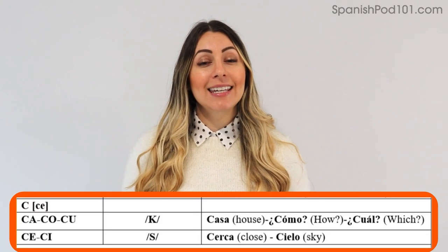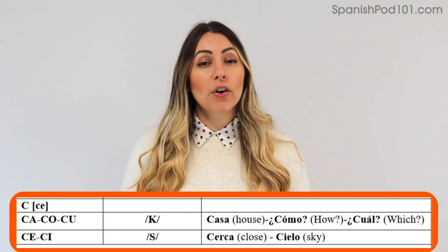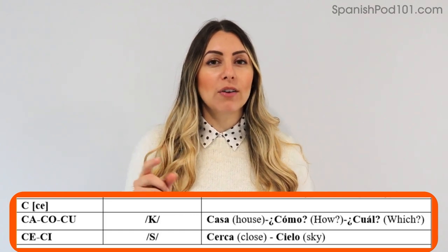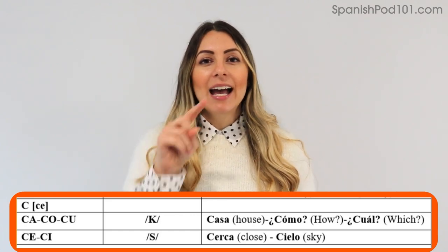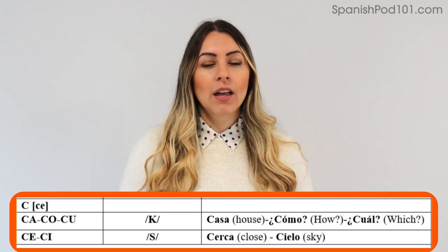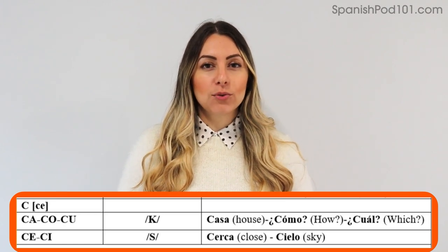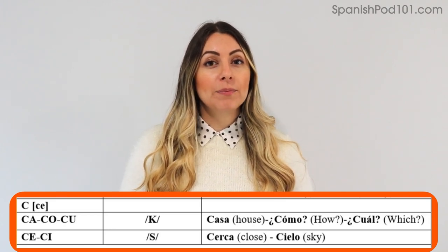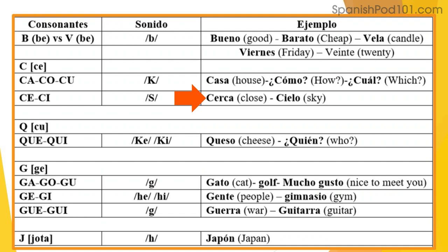If we have C-E or C-I, we are going to pronounce the C with an S sound. For example: cerca, cielo. So remember: ca-co-cu use the hard K sound, and ce-ci use the S sound.